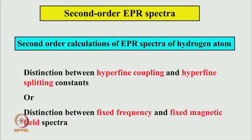So when we are doing the second order calculation, we will take the hydrogen atom as an example and try to make a distinction between hyperfine coupling and hyperfine splitting constants. Also, we will try to make a distinction between fixed frequency experiment and fixed magnetic field experiment, and whether they are the same in all respects or not. The first order spectrum gave the same value for hyperfine splitting constant and hyperfine coupling constant — there was no difference — but we will see some difference may appear when we do the calculation up to second order.